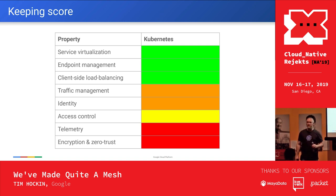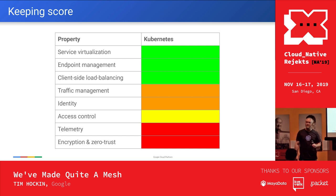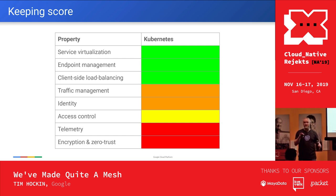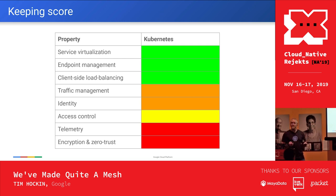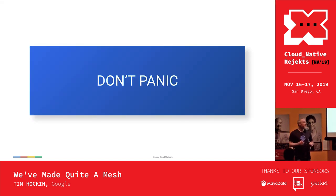Keeping score — I tried to be conservative, but I felt pretty good about this. There are three properties that I think we nailed. There are two that are kind of in danger, and two that are clearly not being met. So not the best score. Maybe I'm not doing the best job of convincing you yet. But I think we can do better.